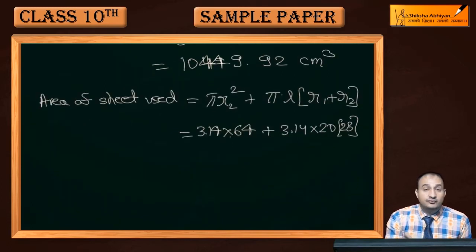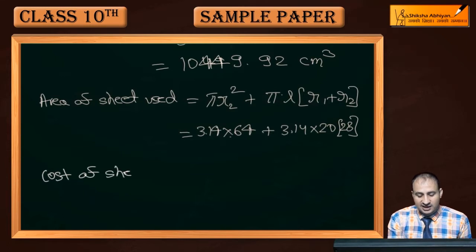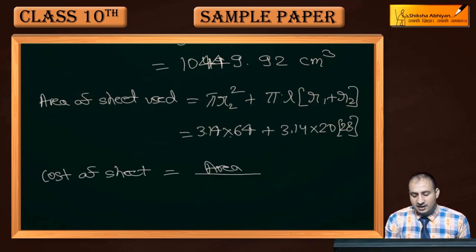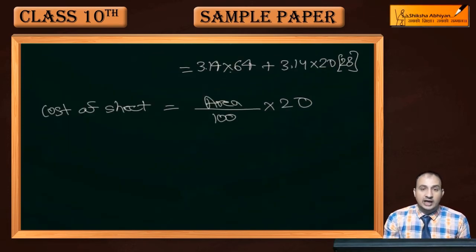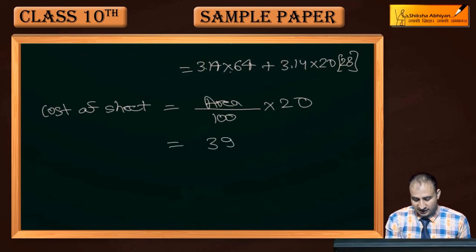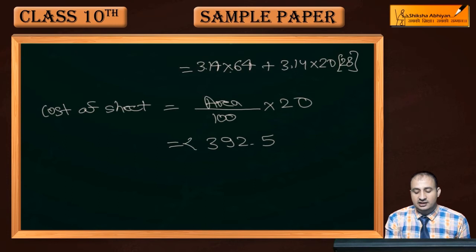We don't need just the area of the sheet but also the cost. Cost of sheet = (Total area ÷ 100) × 20. After calculation, the cost comes out to be ₹392.5.